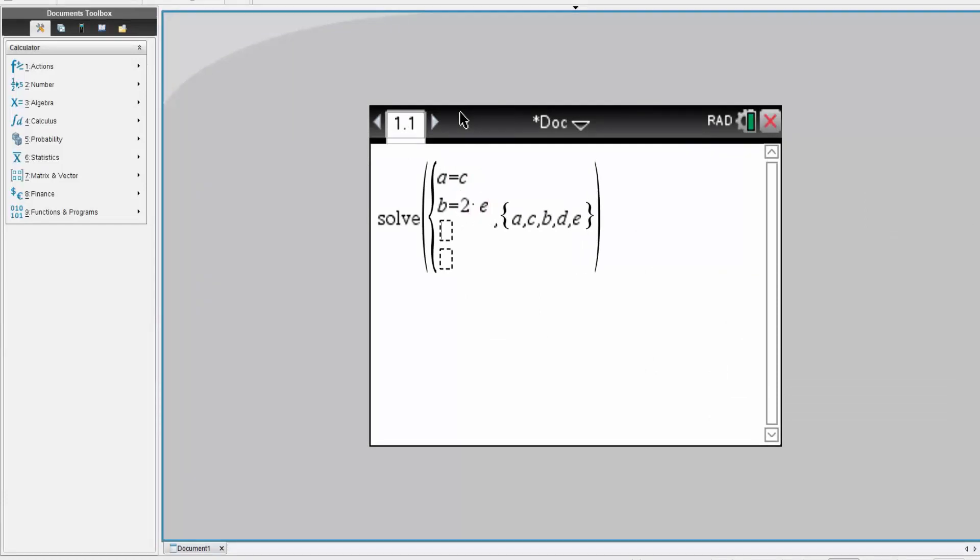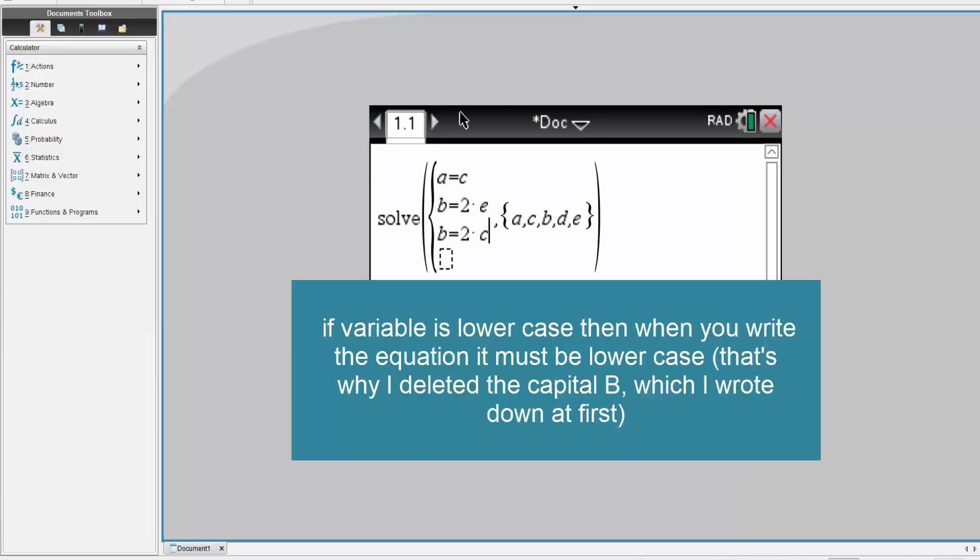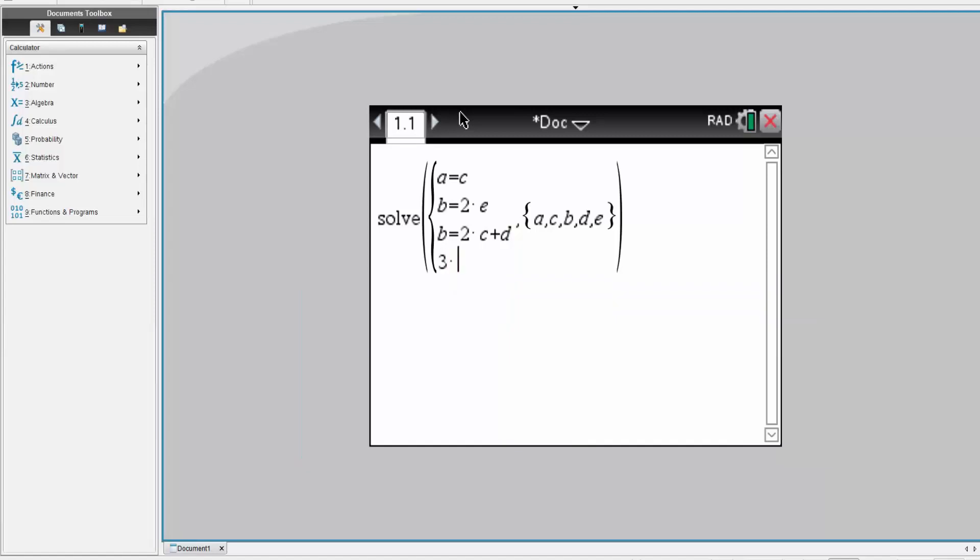Then we do the third equation. B is equal to two times C plus D. And lastly, three times B is equal to six times C plus D plus E.